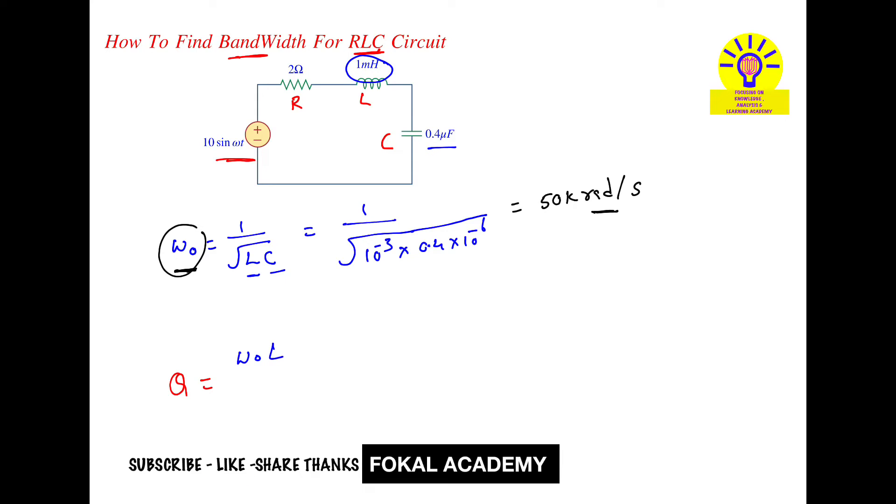omega naught L by R. This is the quality factor formula for series RLC circuits. Now substitute the values: omega naught we got as 50 kiloradians per second, that is 50k, times L which is 1 millihenry, divided by R which is 2 ohms. By simplifying this, we will get quality factor 25.